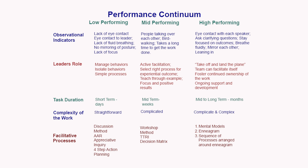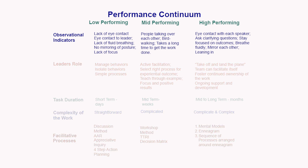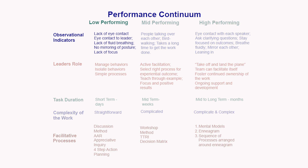The first strand of this performance continuum is called observational indicators, used to diagnose the stage of performance — whether low, mid, or high. For a low performing team, you would see lack of eye contact for whoever is speaking, very little conversation, and very little modeling or mirroring of body posture.